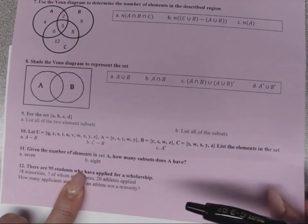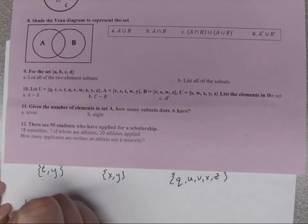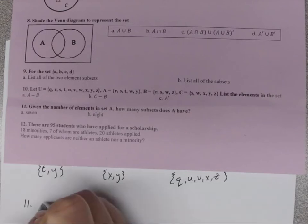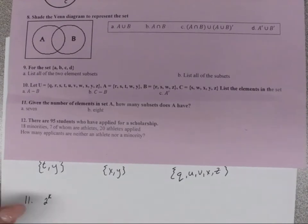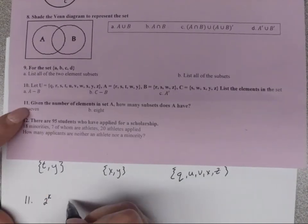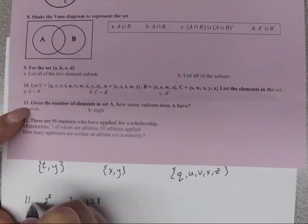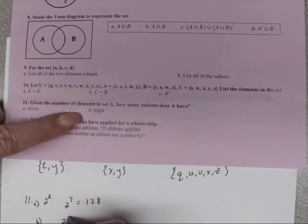Question 11: Given the number of elements in set A, how many subsets does A have? The formula is 2 to the K power, where K is the number of elements. For Part A, K equals 7, so 2 to the 7th equals 128. For Part B, 2 to the 8th equals 256.